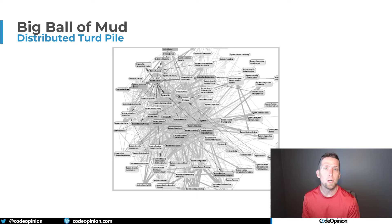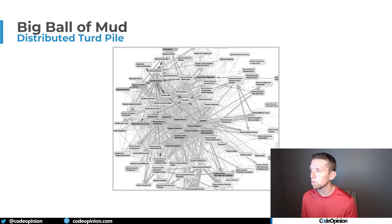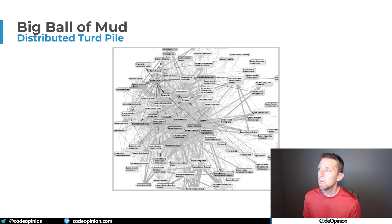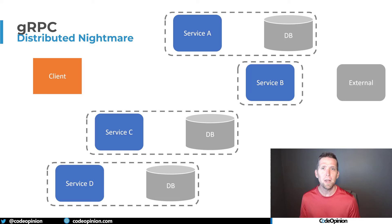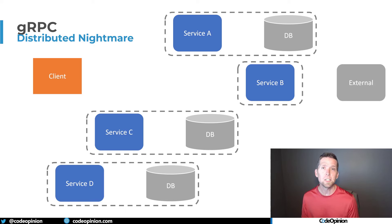Now let's talk about direct communication from service to service. Whether we're talking about a monolith or a distributed application with different services, if we have service-to-service communication with gRPC, I call this the distributed turd pile. There's really no fundamental difference between this and a monolith in terms of coupling. Just because you're doing it in a contract doesn't change anything — you're really just adding a network. You're not less coupled than you are in a monolith. This is what most articles and videos advocate, which I completely do not advocate for.